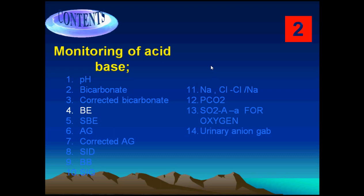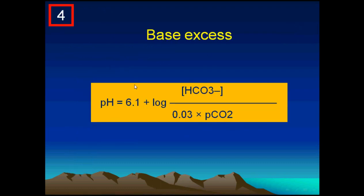The topic of today is the base excess and the standard base excess. The pH, as you know, is the net result of concentrations of bicarbonate and partial pressure of carbon dioxide. The partial pressure of carbon dioxide has a share in the pH value, and the bicarbonate has a share in the pH value. A change in the partial pressure of carbon dioxide will affect the pH, and a change in the bicarbonate will also affect the pH.